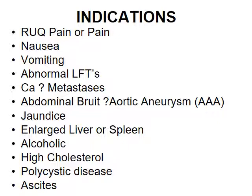Anything to do with the digestive system, nausea and vomiting — while ultrasound is pretty much useless for looking at the stomach and bowel because gas scatters the sound wave, we're looking at the other organs to see if they look normal or if there are any large masses. Abnormal LFTs, or liver function tests, are very common. GPs will run basic blood tests, and if the liver function comes back abnormal, often the first test they'll do is an abdominal ultrasound to see what the liver looks like.